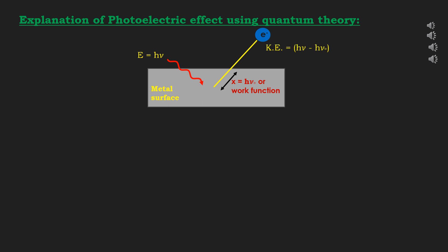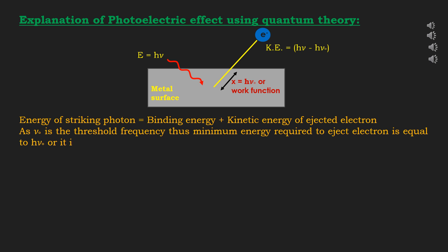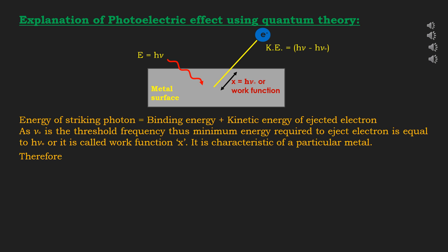This may be expressed as: energy of striking photon = binding energy + kinetic energy of ejected electron. As ν₀ is the threshold frequency, the minimum energy required to eject an electron is equal to hν₀, which is called the work function. It is the characteristic of a particular metal. Therefore: hν = hν₀ + ½mv², or kinetic energy = hν − hν₀.